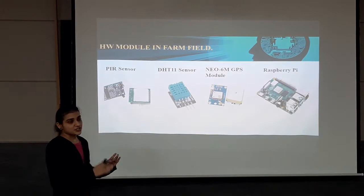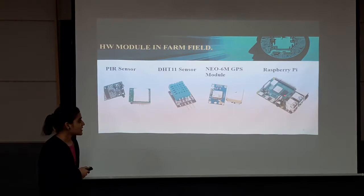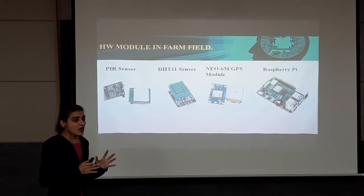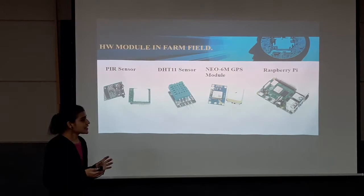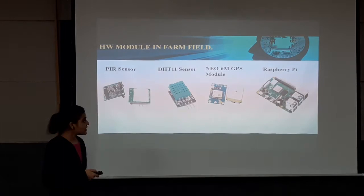The main function is to generate data whenever motion is detected. If there is no motion, no data — like temperature or humidity — will be collected by the Raspberry Pi, and it will not be sent to the cloud or processed. Only when motion is detected will all other instance data be generated by the environmental sensors, and location data from the GPS module will be sent via Raspberry Pi.